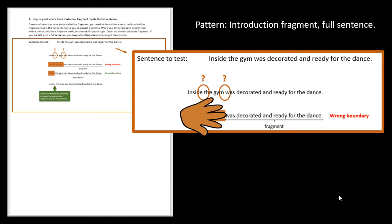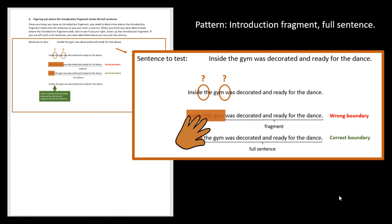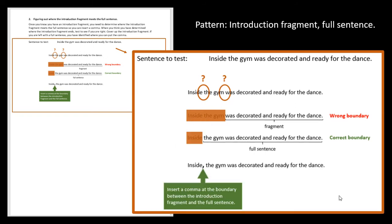So let's try the other one. We'll cover up inside and see if we're left with the full sentence. The gym was decorated and ready for the dance. We have a full sentence. So it follows the pattern we need. So it means that we insert a comma at the boundary between the introduction fragment and the full sentence.